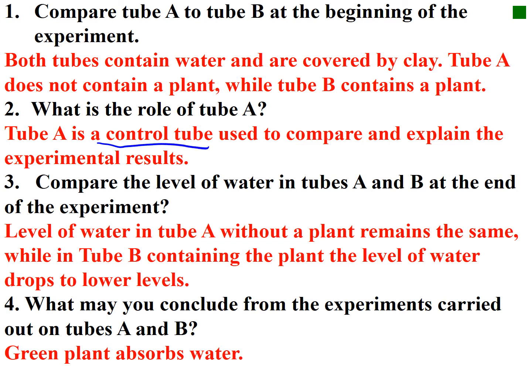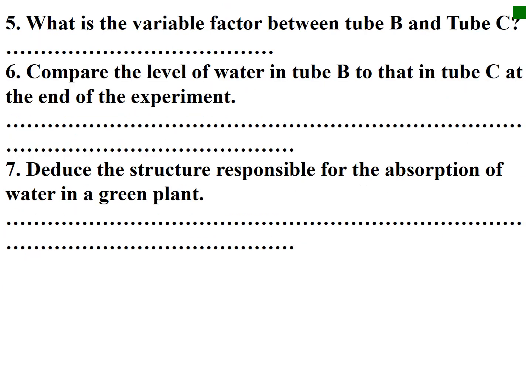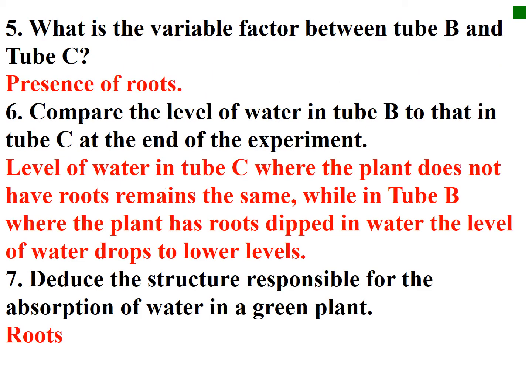Comparing water levels at the beginning and end: in tube A without a plant, the water level remains the same. In tube B containing a plant, the water level drops to a lower level. Conclusion: green plants absorb water. The variable factor between tubes B and C is the presence of roots. In tube C, where the plant has no roots, the level stays the same, while in tube B, where the plant has roots dipped in water, the level drops. The structure responsible for absorption is the roots, especially the root hairs.